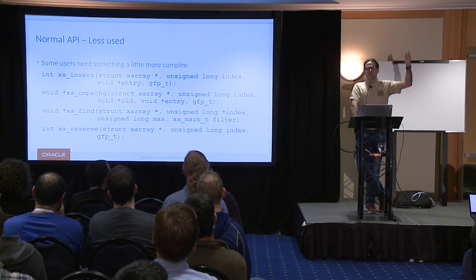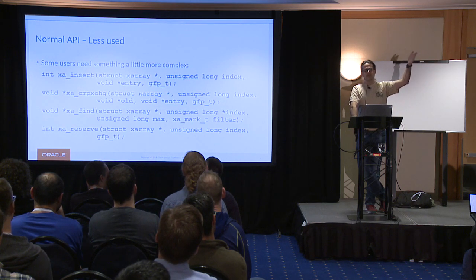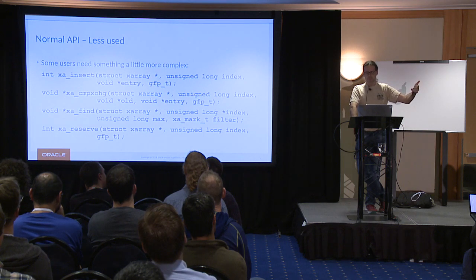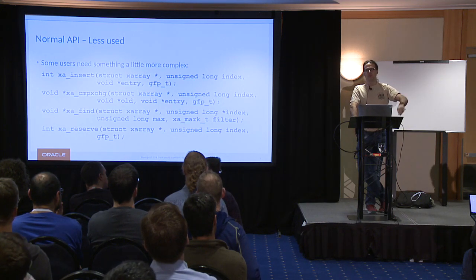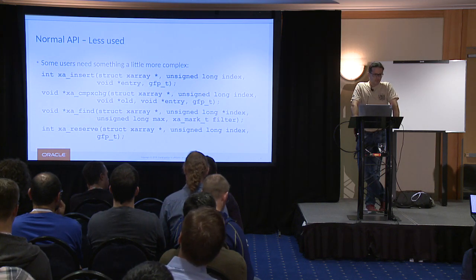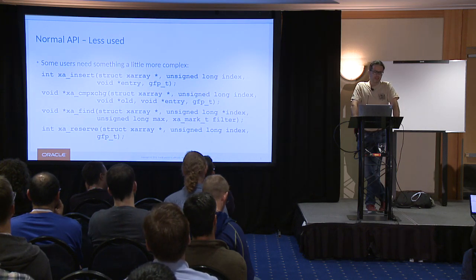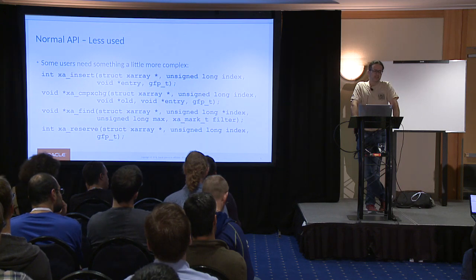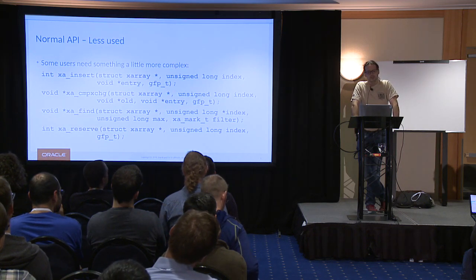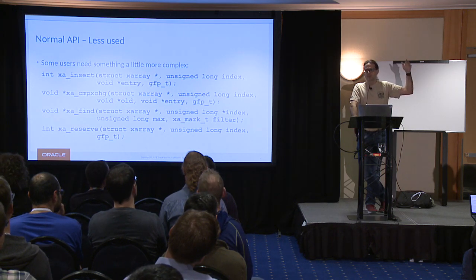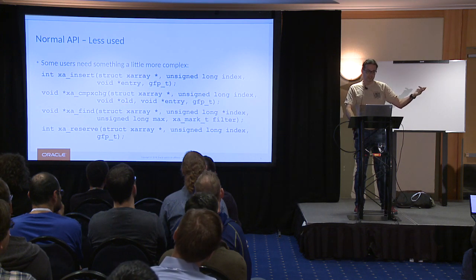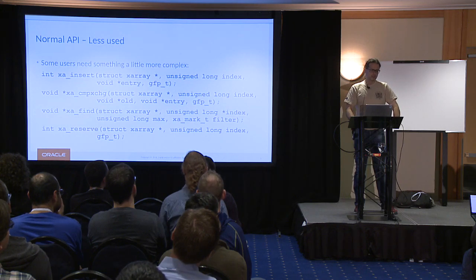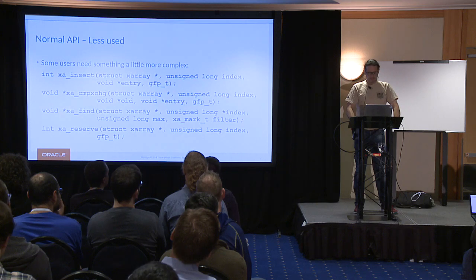xa_find, starting at index, looks forward in the tree up to max to find the next entry. There's also xa_find_after which will look at index plus one as the lowest value it returns. And there's xa_reserve, which reserves a spot in the tree, putting in a value that looks null to anyone else but you can use. This is basically saying: I can allocate memory now but I'm about to take complicated spin locks where I won't be able to sleep to allocate space later. We only have about three uses of xa_reserve in the kernel.